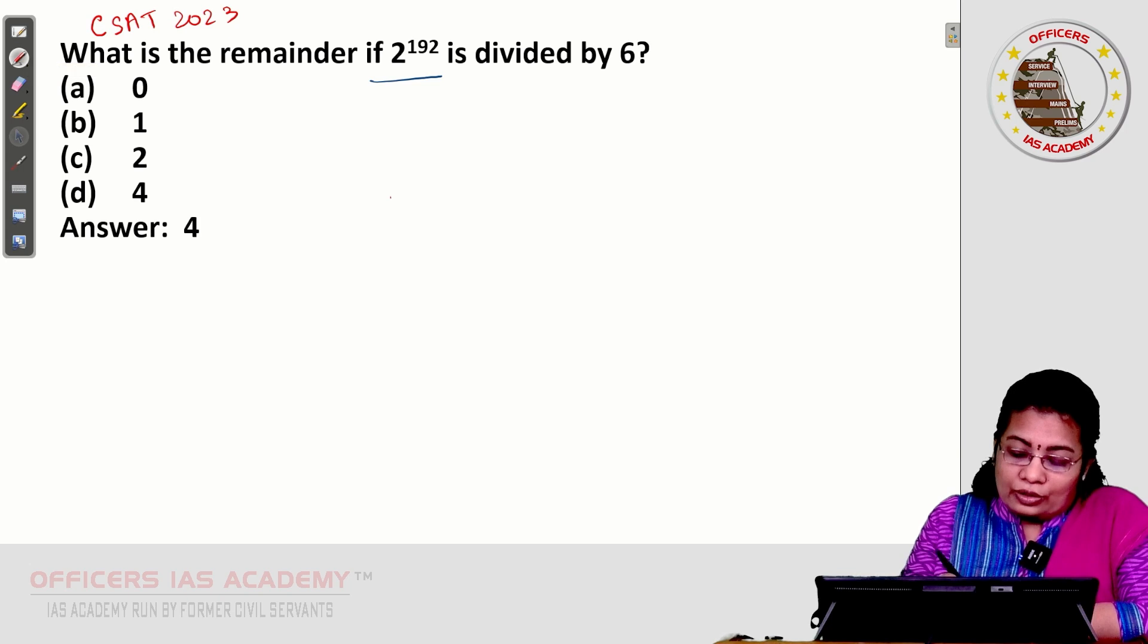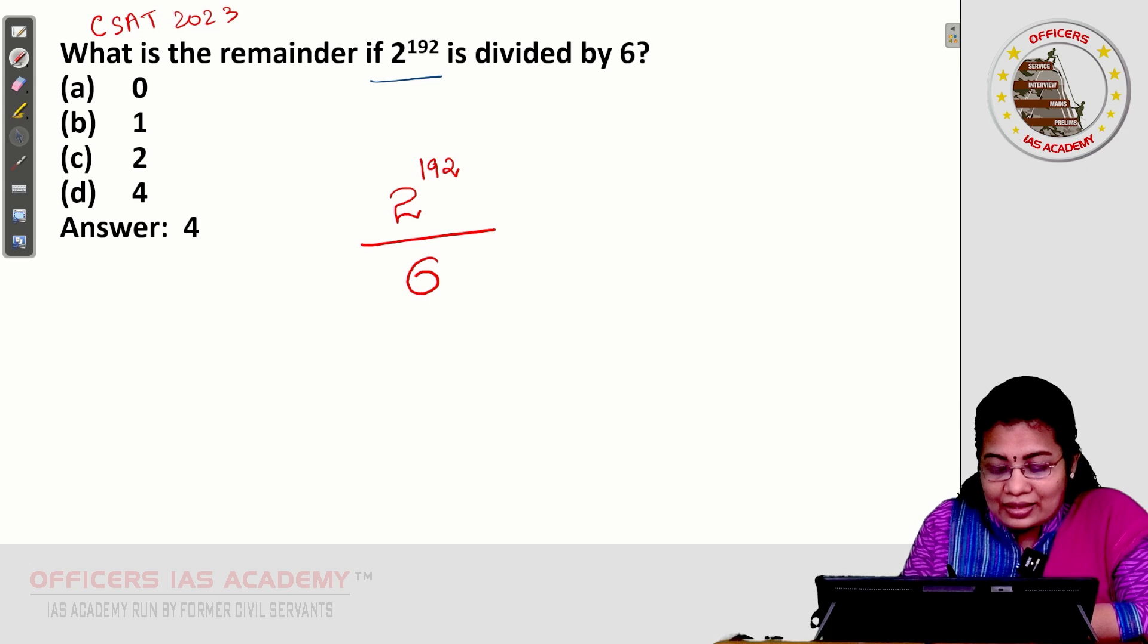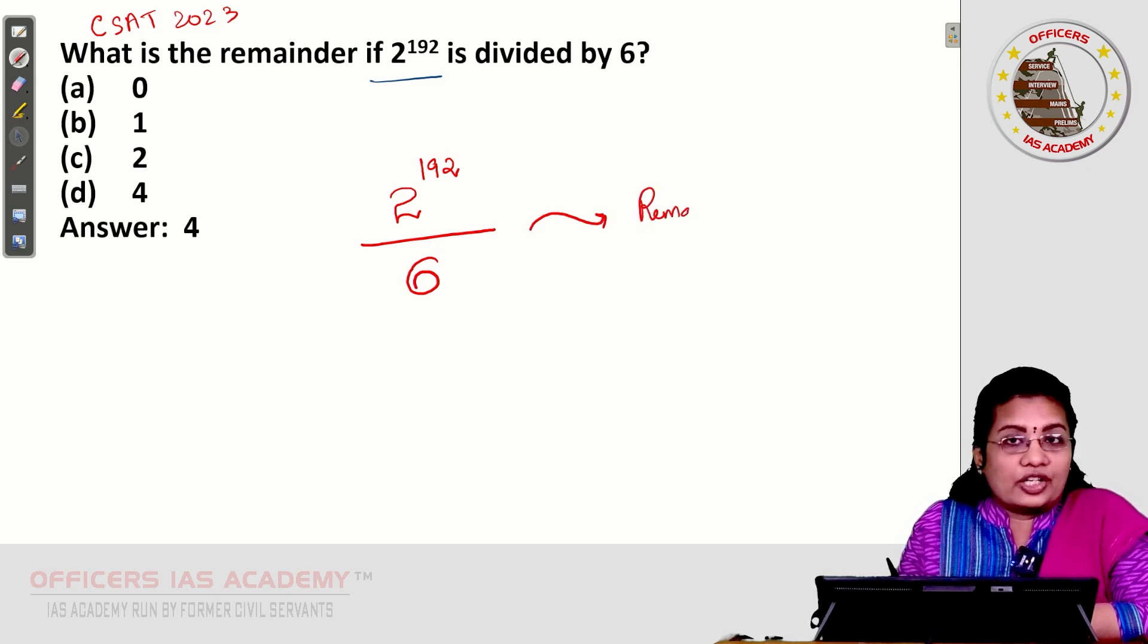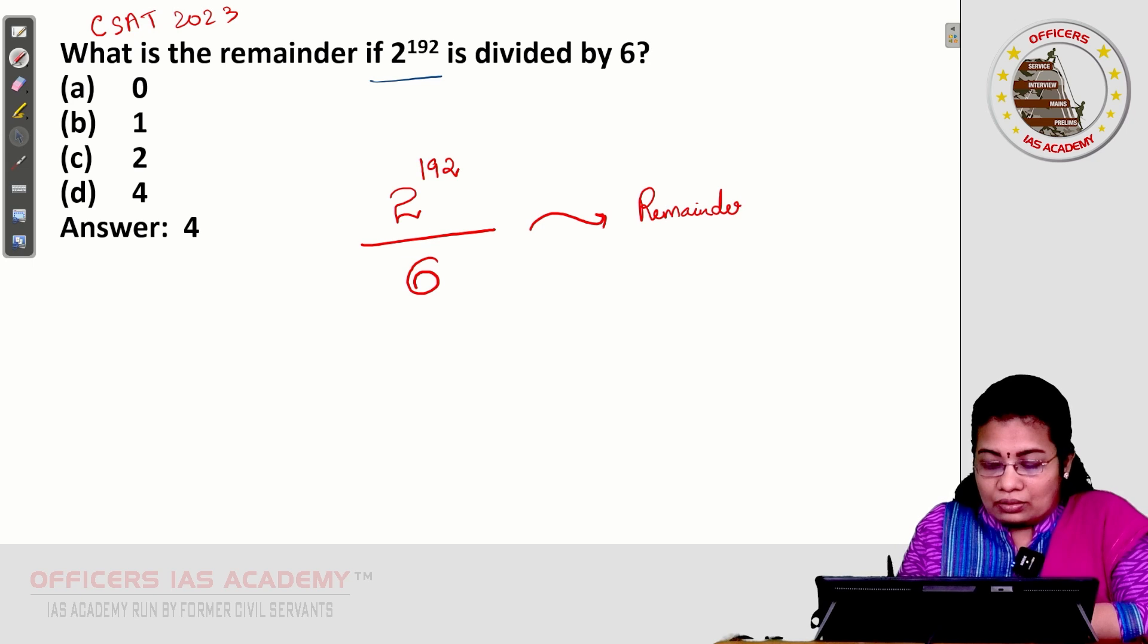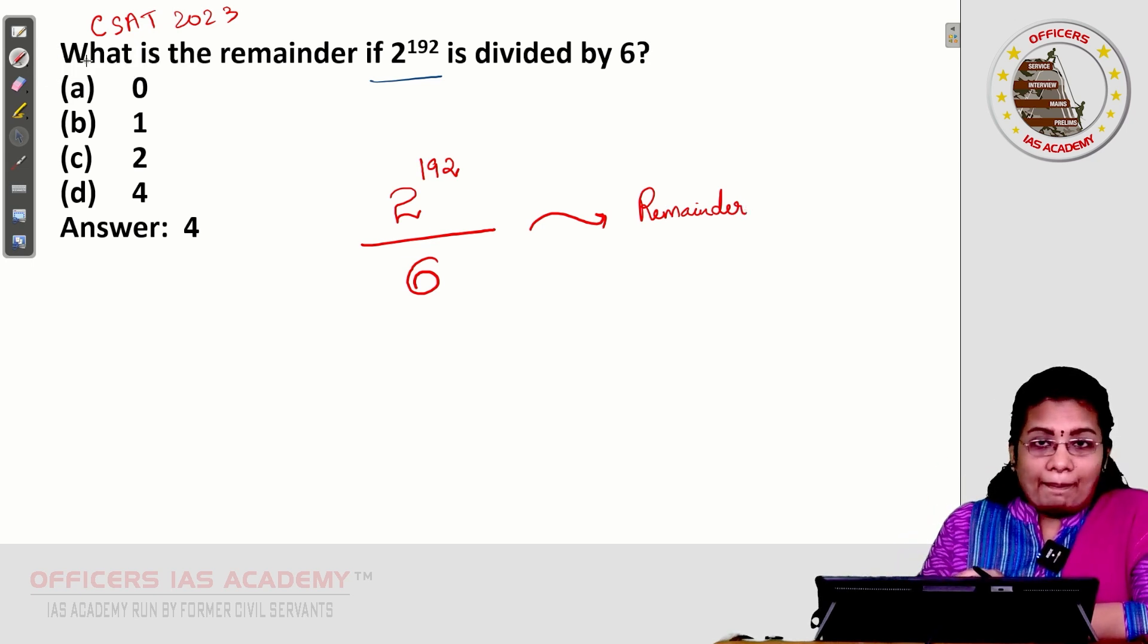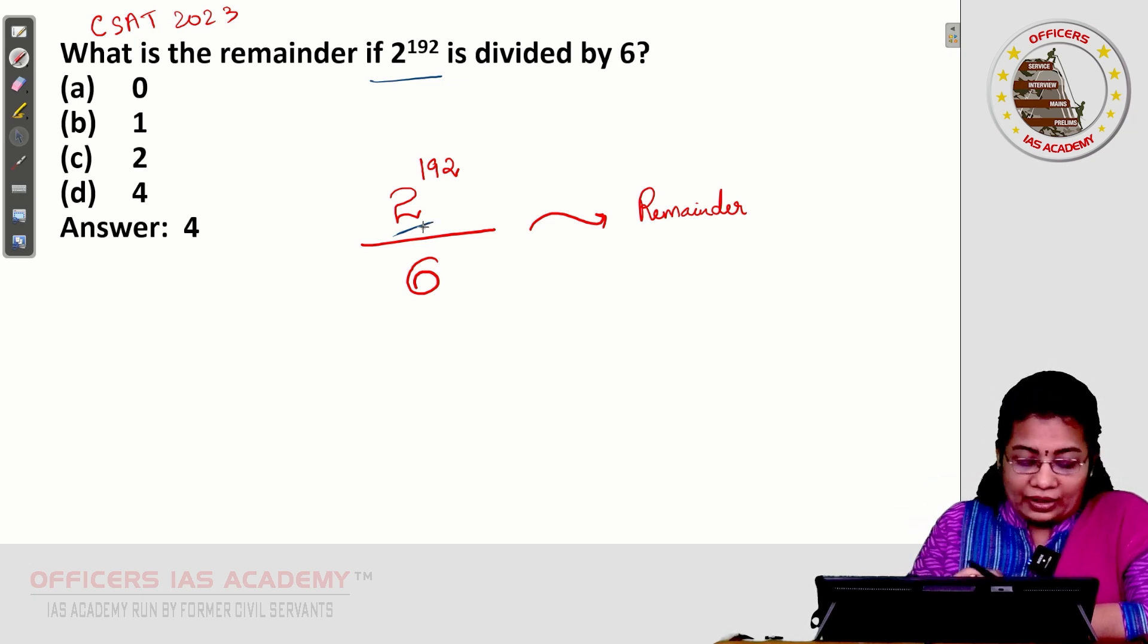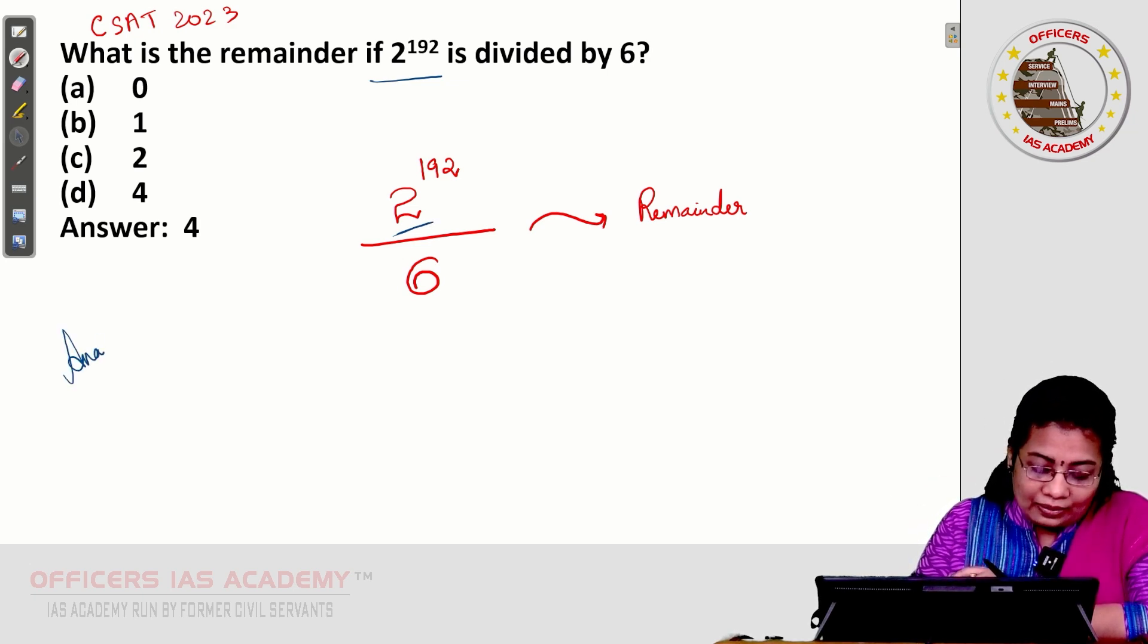Given is 2 power 192 when divided by 6, what is the remainder? This is the question actually. For this, what we can do? Just analyze the powers of 2 because 2 is given in the base of the numerator.